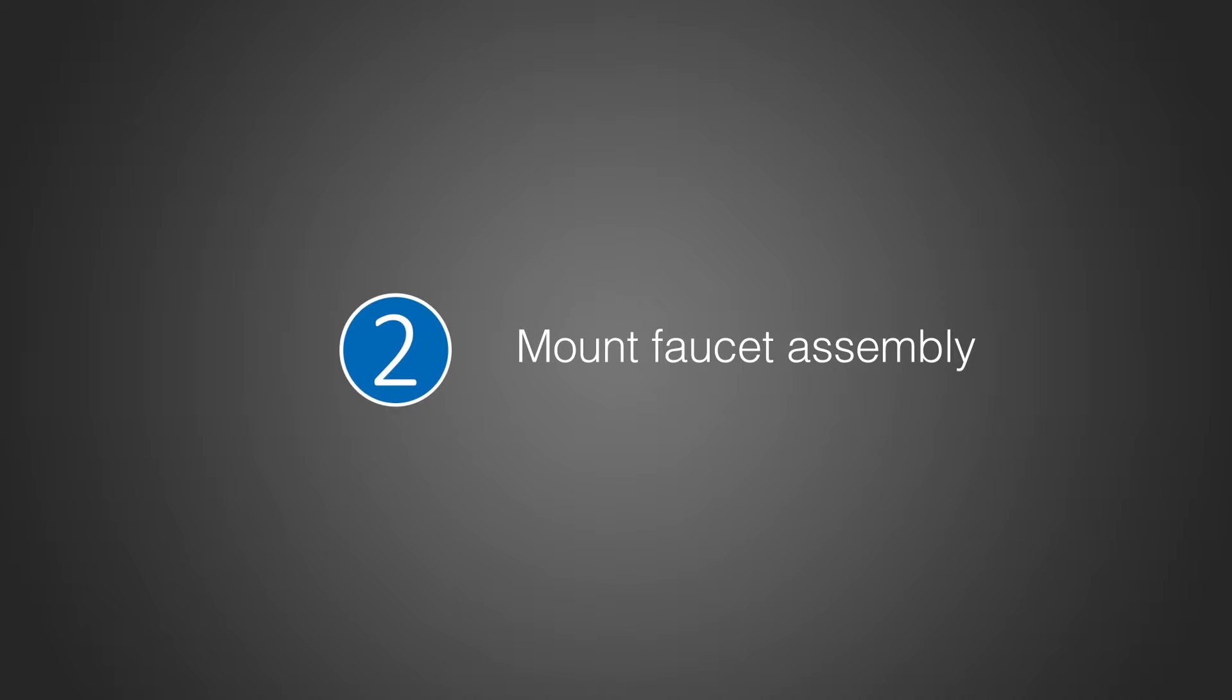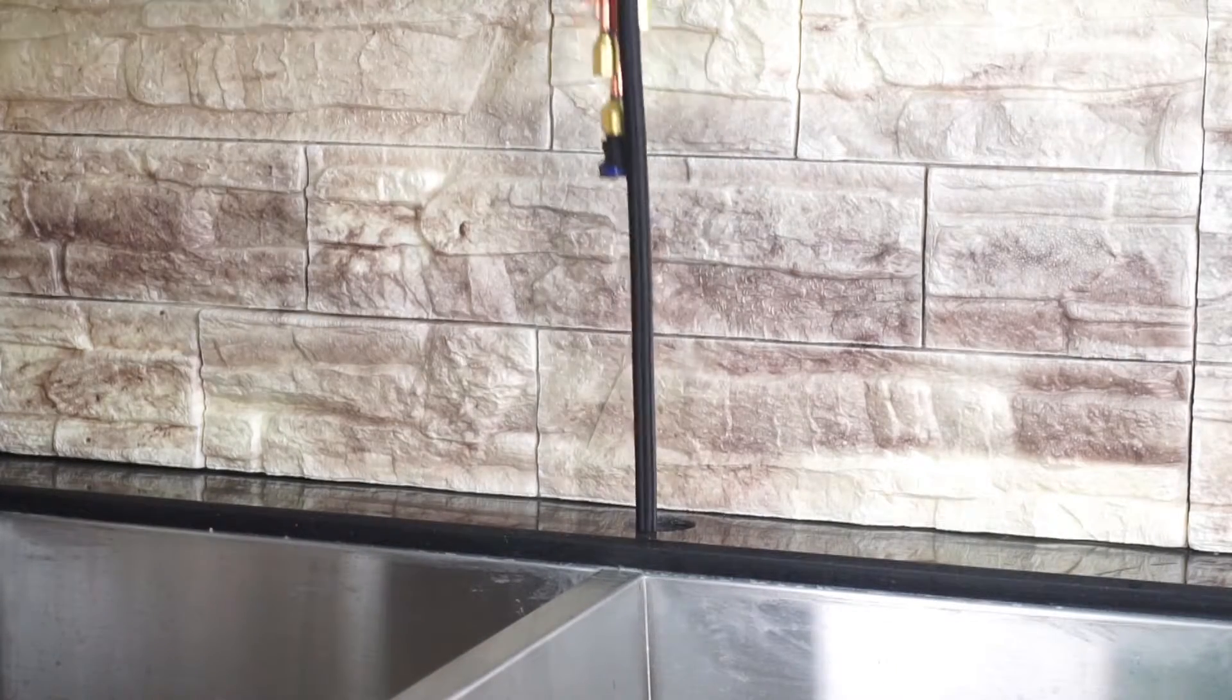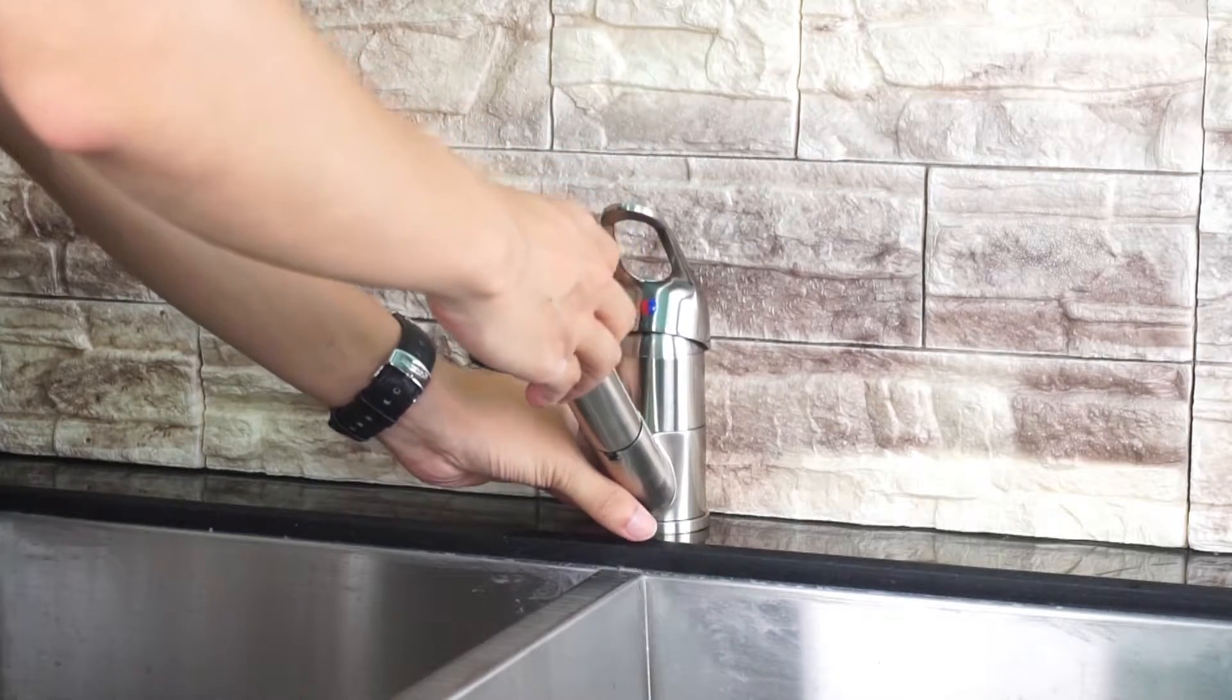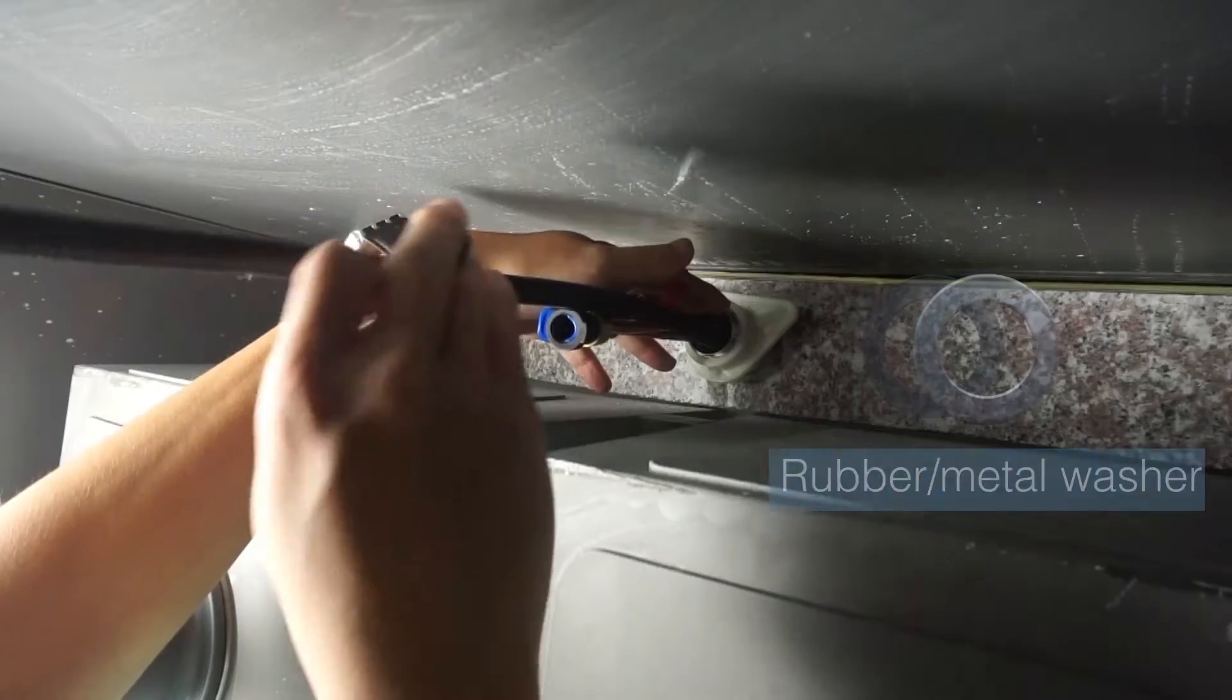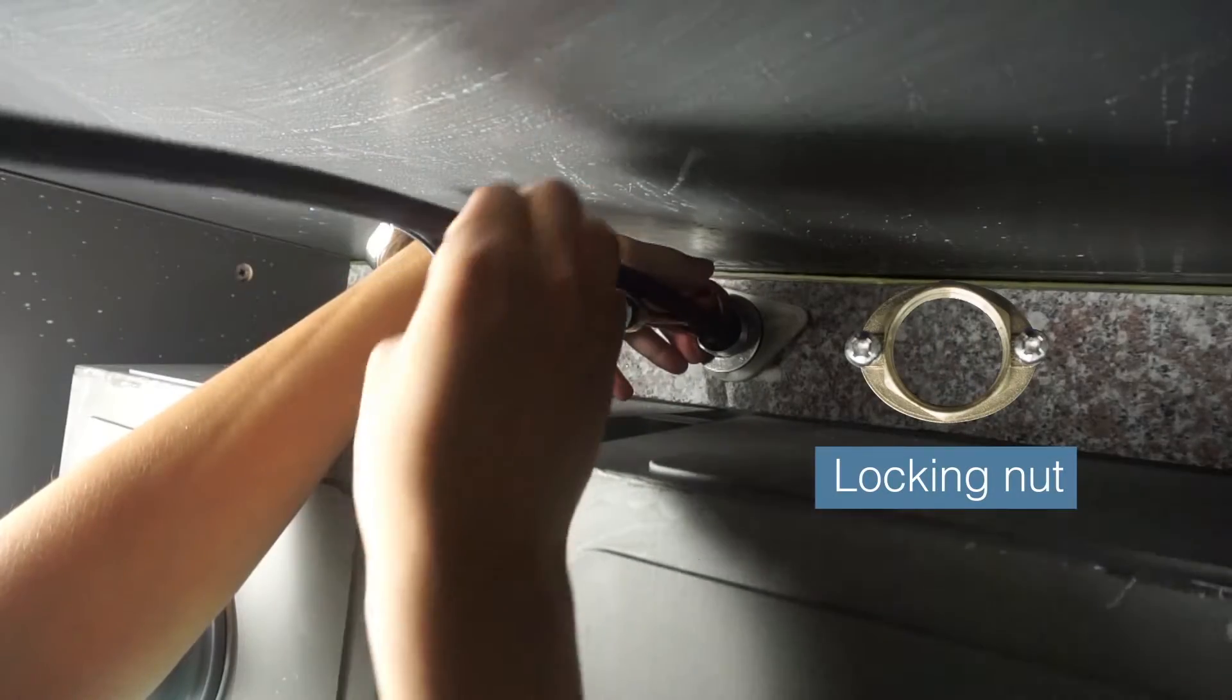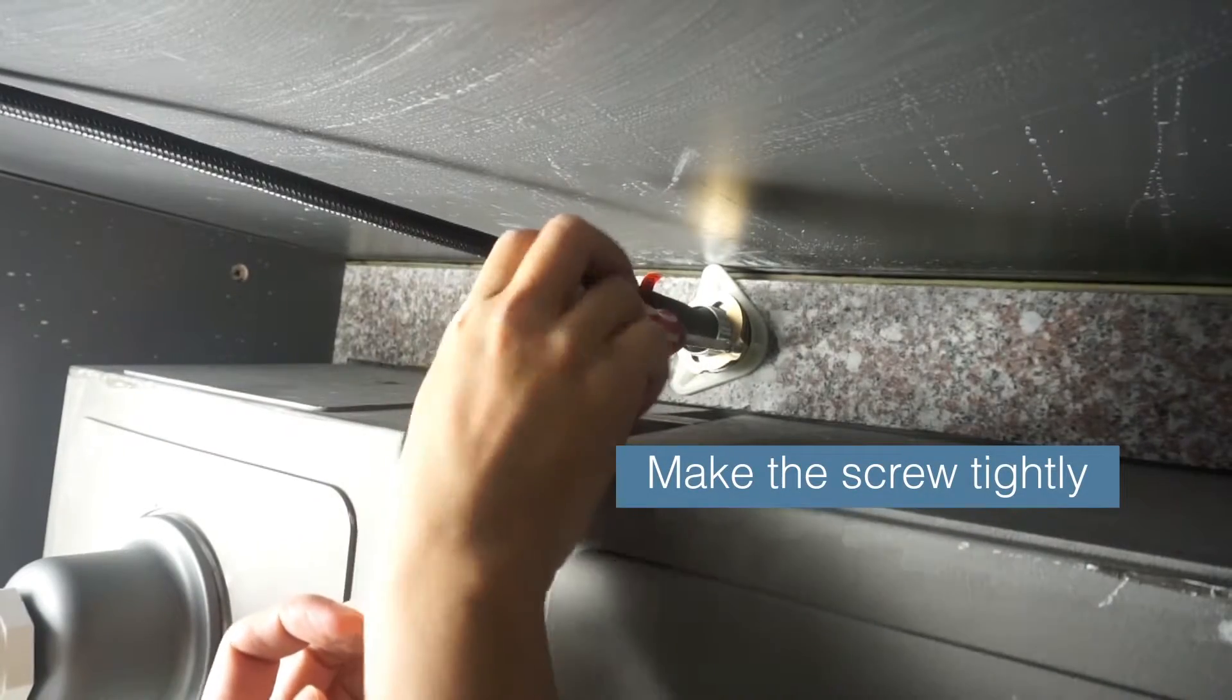Mount faucet assembly: Install faucet through center hole. Install white spacer, rubber washer, and metal washer. Using a screwdriver, tighten the lock nut screws so that the faucet is secured and will not rotate.